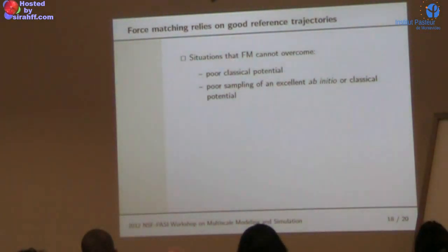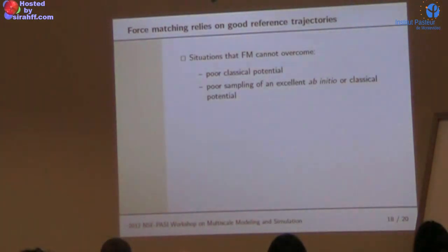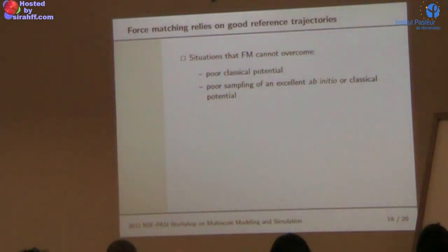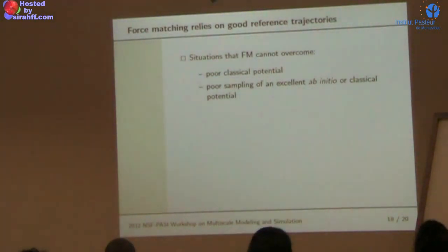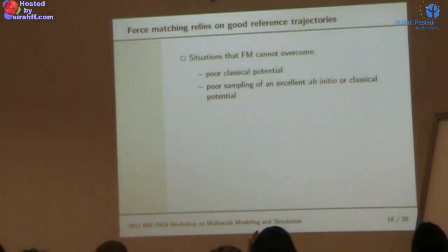Force matching has inherent limitations. You have to have access to good classical or ab initio potentials — if the classical potential is not good for the system you're studying, don't expect force matching to fix it by coarse-graining. You can never outperform your classical potential. And if you have a great potential but haven't sampled it well enough, force matching can't overcome poor sampling. The standard sampling diagnostic tests apply whether it's a protein or a solvent.